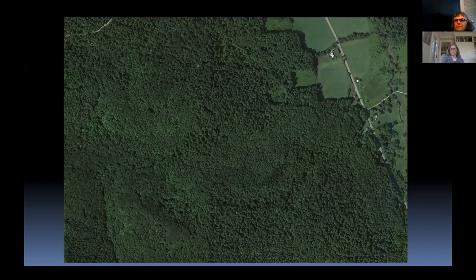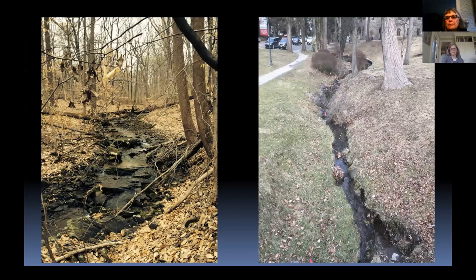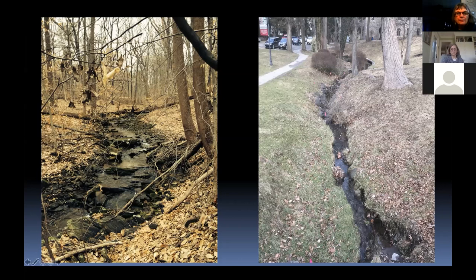What our watersheds used to look like is shown in the photograph on the left — a headwater stream with a drainage area of only about 100 acres, taken in winter. You can see there are no steep eroded banks; the slopes into the stream channel are nice and flat. On the right is a watershed with about the same number of acres draining to it, on a college campus where they mow all the way down to the bank — now just a squeezed little channel. We've altered our watersheds substantially.